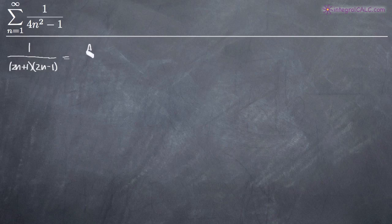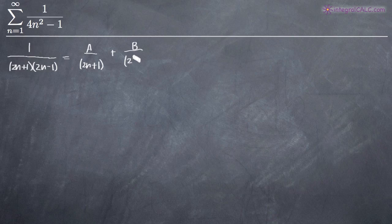To perform a partial fractions decomposition, we're going to set this fraction equal to A divided by the first term in the denominator, 2n plus 1, and then add B over the other term, 2n minus 1. Now we're going to multiply both sides by the denominator from the left-hand side, so we multiply by 2n plus 1 times 2n minus 1.